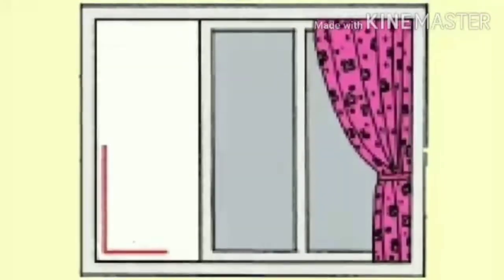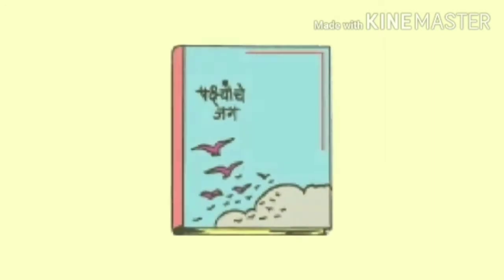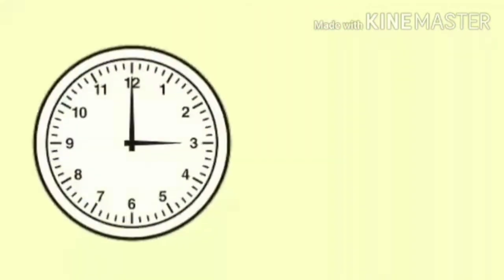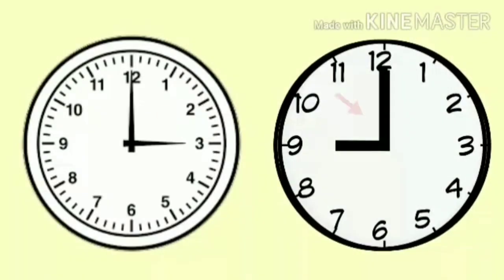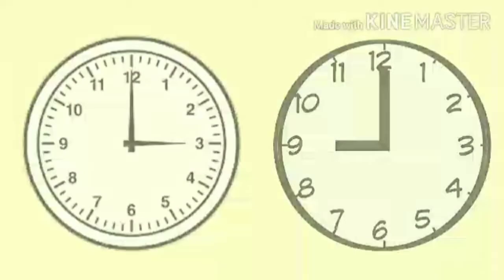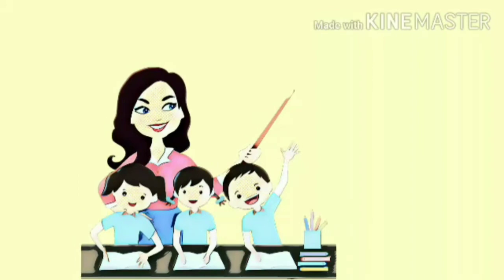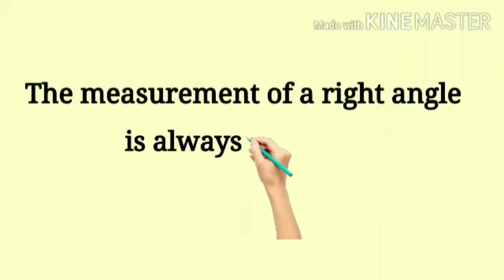We see a right angle between two adjoining sides of a window. The two adjacent sides of a book make a right angle. In a clock at three o'clock and nine o'clock, the minute hand and hour hand are at right angles to each other. Keep one thing in your mind dear children: the measurement of a right angle is always 90 degrees.